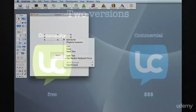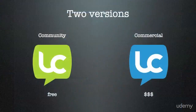You might now ask, what's the cost of such a tool? Well, it's free. LiveCode comes in two versions: a community version that you can download for free, and a commercial version that is sold. You will need the commercial version only if you want to distribute your apps and compile your code so that no one else can see it.